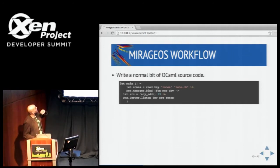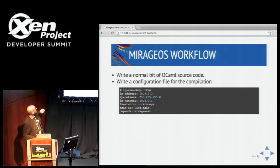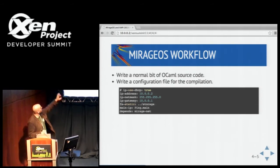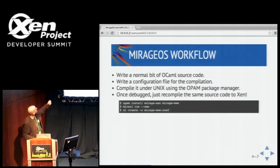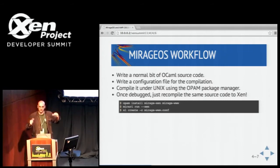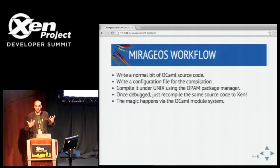To summarize: you just write a normal bit of OCaml code — for example, a DNS server — and write a configuration file that's also translated into OCaml. Everything is homogeneously compiled together. Then you type 'opam install mirage-unix' and run it under Unix. Once debugged, you recompile the same source code to Xen with 'opam install mirage-xen' and use Xen to construct it as normal. The magic happens via the OCaml module system: everything is type-safe and any errors or inconsistencies will be rejected.